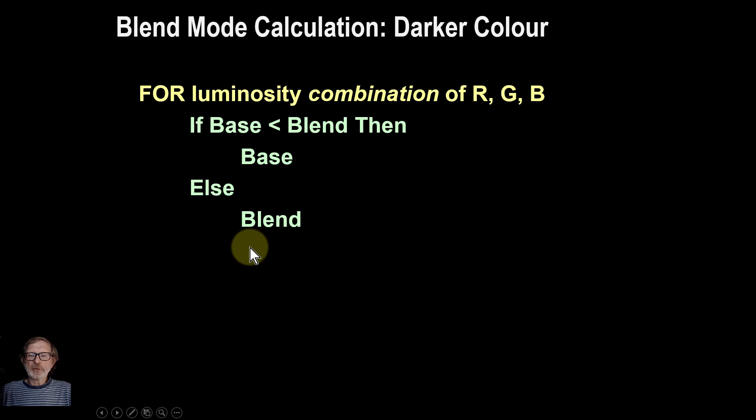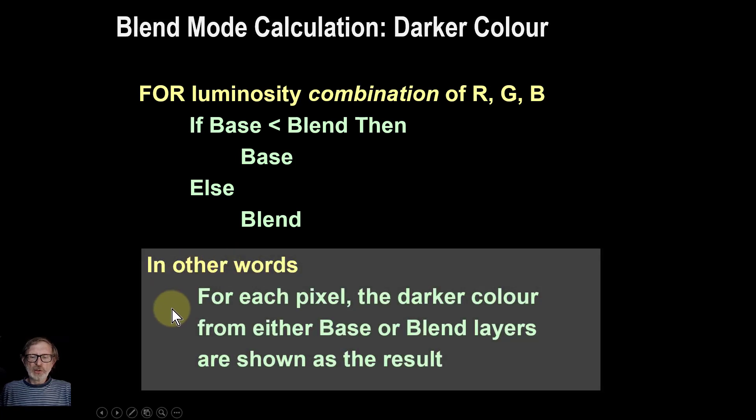The calculation for it is a little bit different. What it does is it actually combines the red, green, and blue for the base layer and for the blend layer to figure out which is the lighter or darker color. In other words, for each pixel the darker color from either the base or the blend layers are shown.